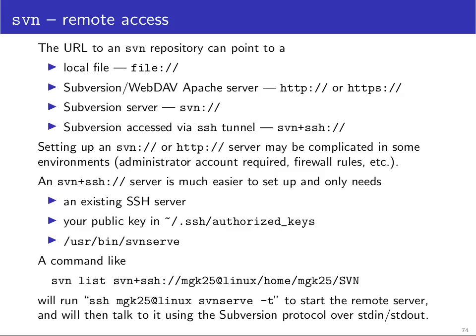A few more notes on remote access with Subversion. In the previous example we saw how to use the file scheme in the URL syntax to access a repository on the local file system. You can also use HTTP or HTTPS if someone has set up the Subversion extension for the Apache server. You can also run a Subversion server directly that comes with the Subversion distribution, where the URL starts with SVN.